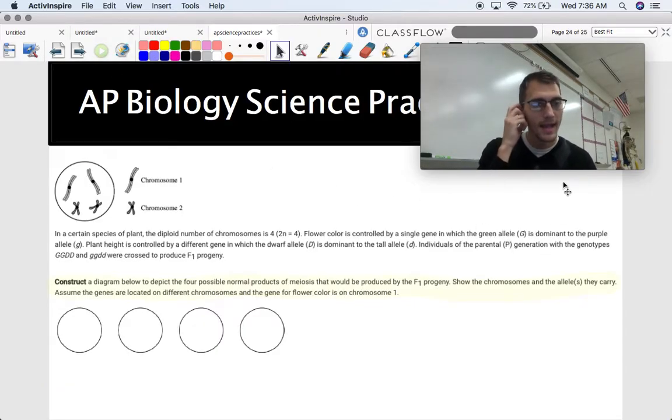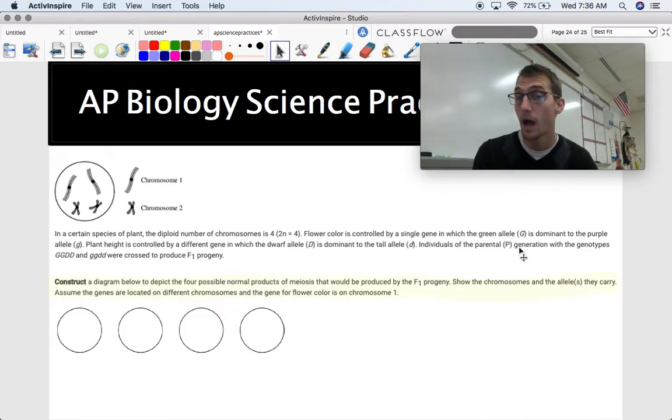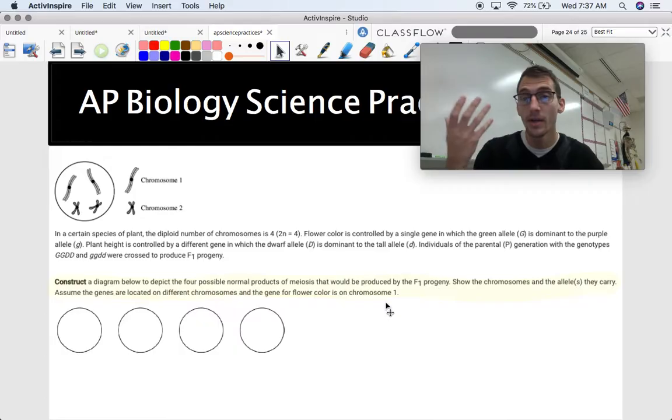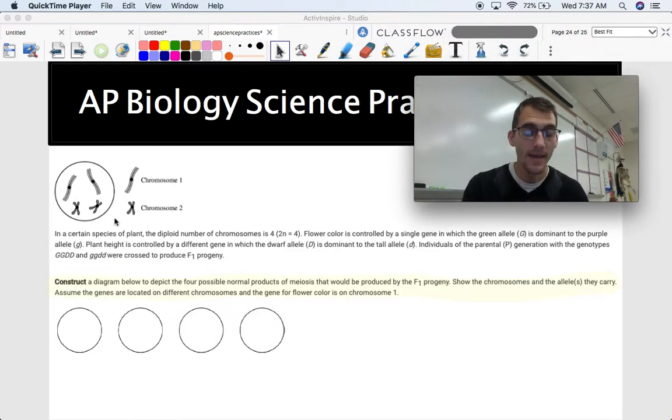And here's another one. It's a little smaller. And this is about meiosis, the four possible normal products of meiosis produced by the F1 progeny. And it describes what the F1 progeny and the P progeny, excuse me, parental generation are all about in this text up here. Show the chromosomes and the alleles they carry. Assume the genes are located on different chromosomes, and the gene for flower color is on chromosome one. So it's asking you to build or diagram or represent visually, how those genes are going to get passed down and how genetic variation is going to be increased through meiosis based on this text up here and based on this visual representation up here. There's chromosome one, there's chromosome two. Show us what you know.